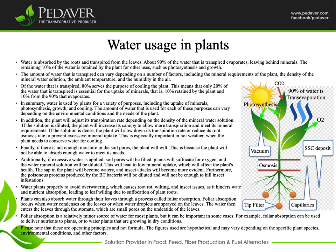Foliar absorption is a relatively minor source of water for most plants, but it can be important in some cases. For example, foliar absorption can be used to deliver nutrients to plants, or to water plants that are growing in dry conditions.